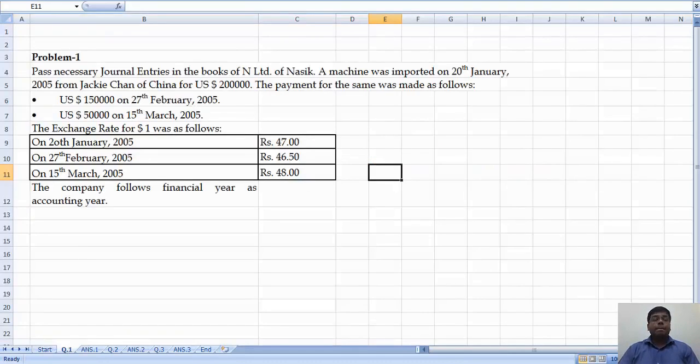Question number one: pass necessary journal entries in the books of N Limited of Nasik. A machine was imported on 28th January 2005 from Jackie Chen of China for US dollar 2 lakhs.